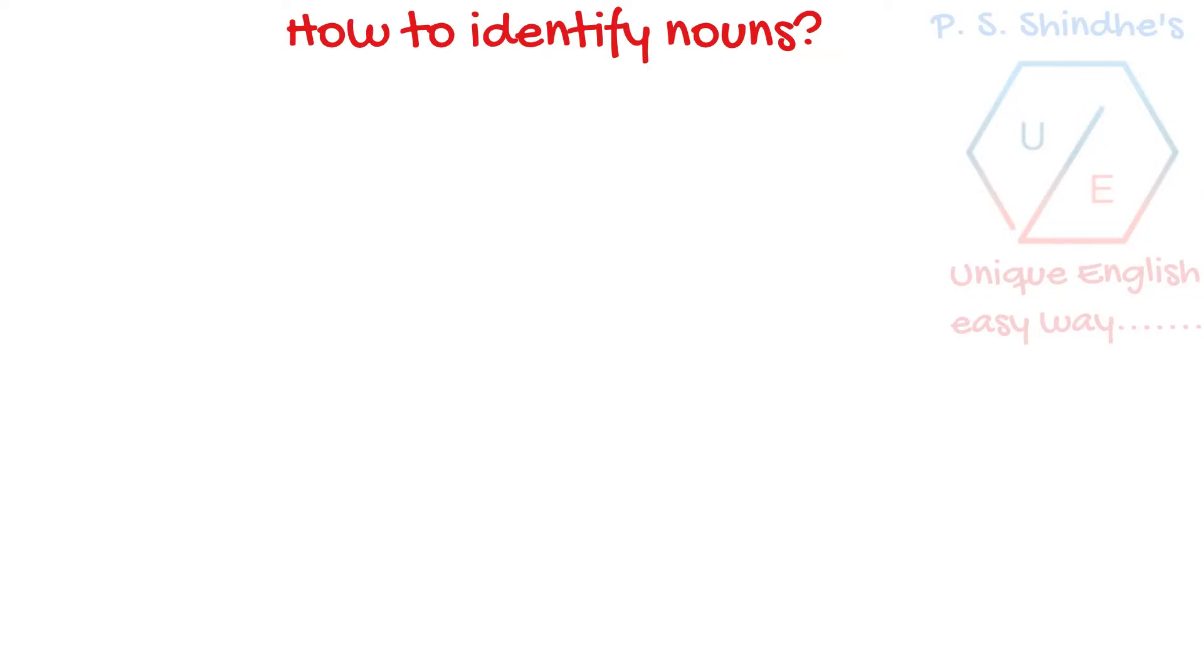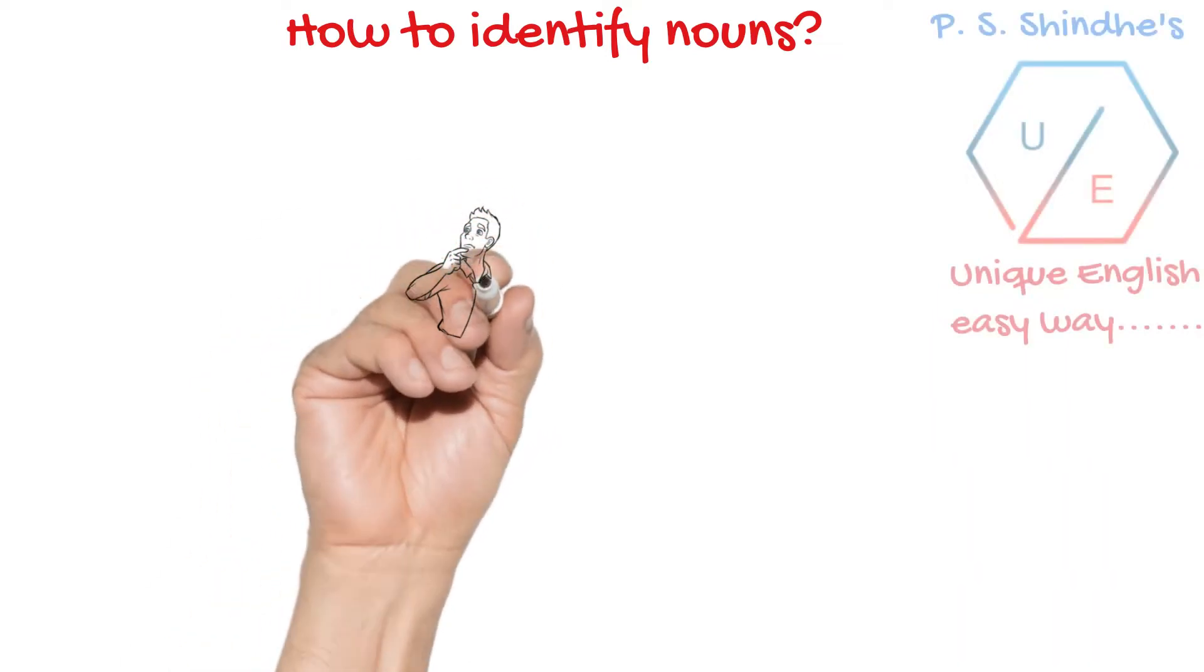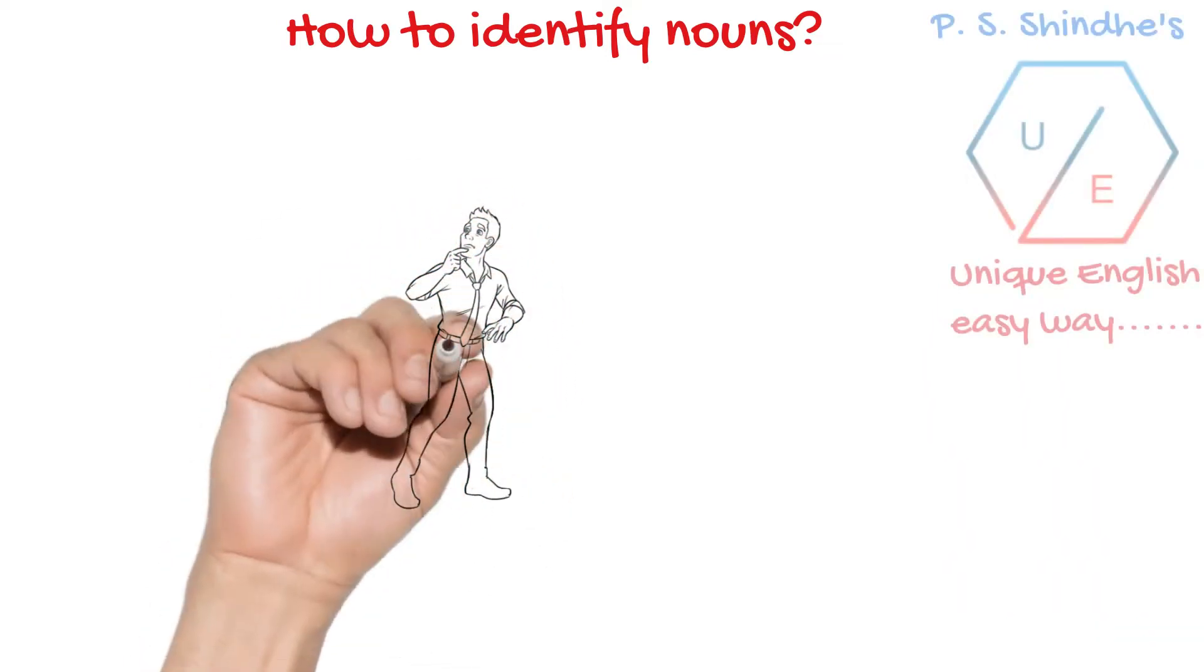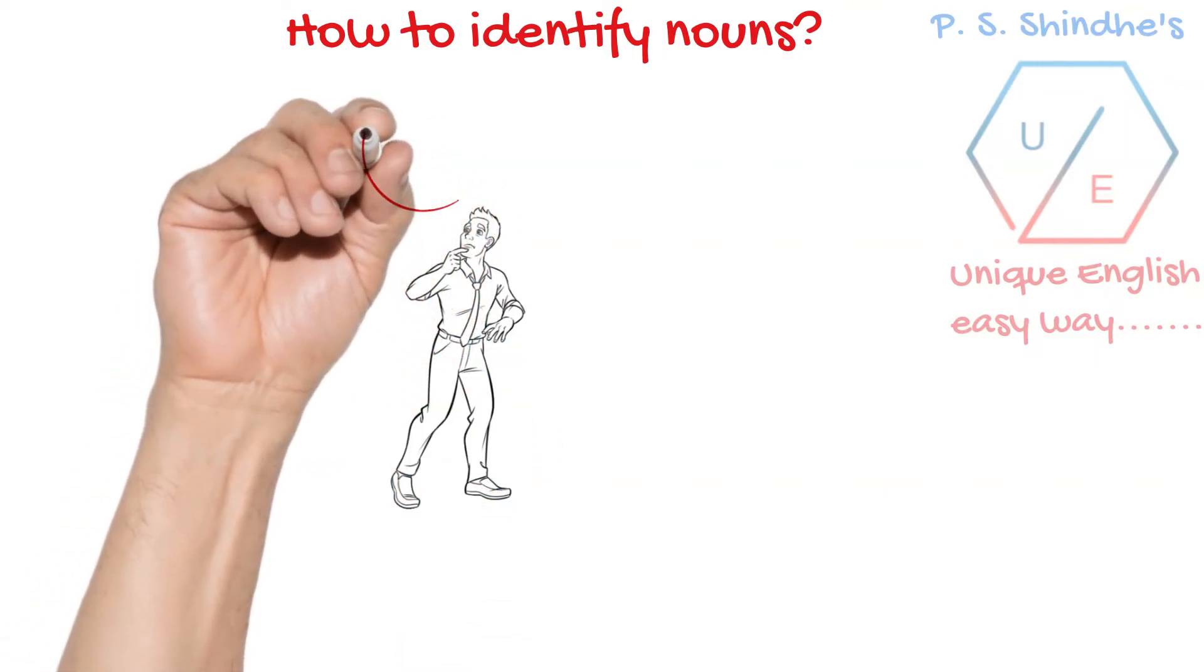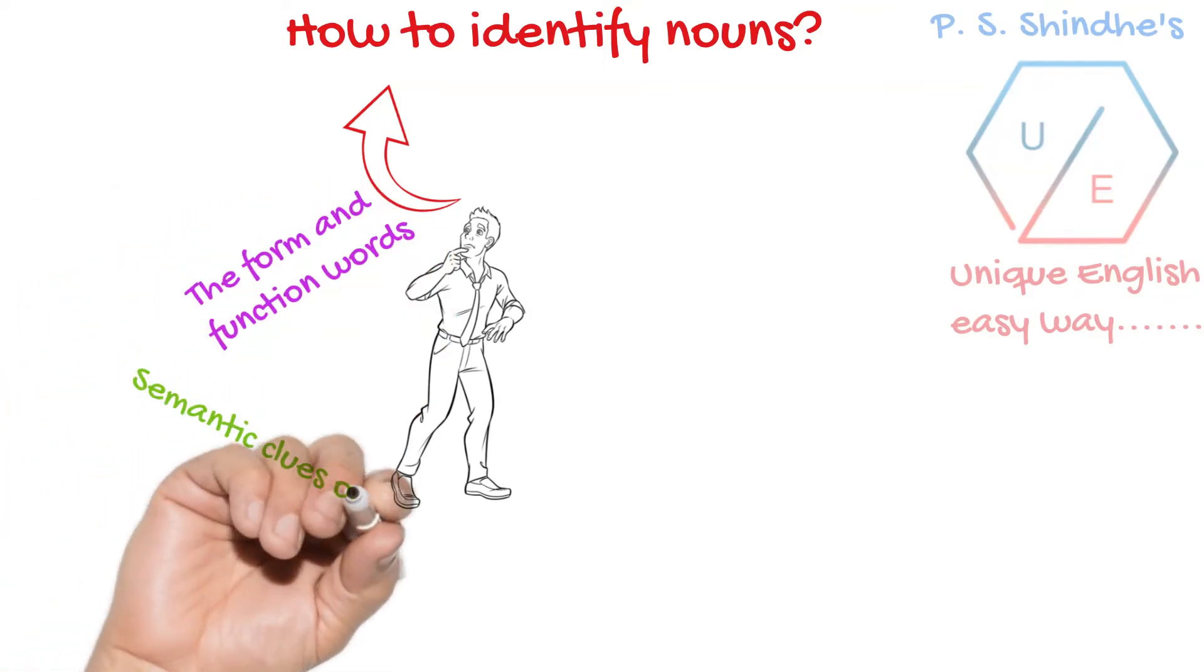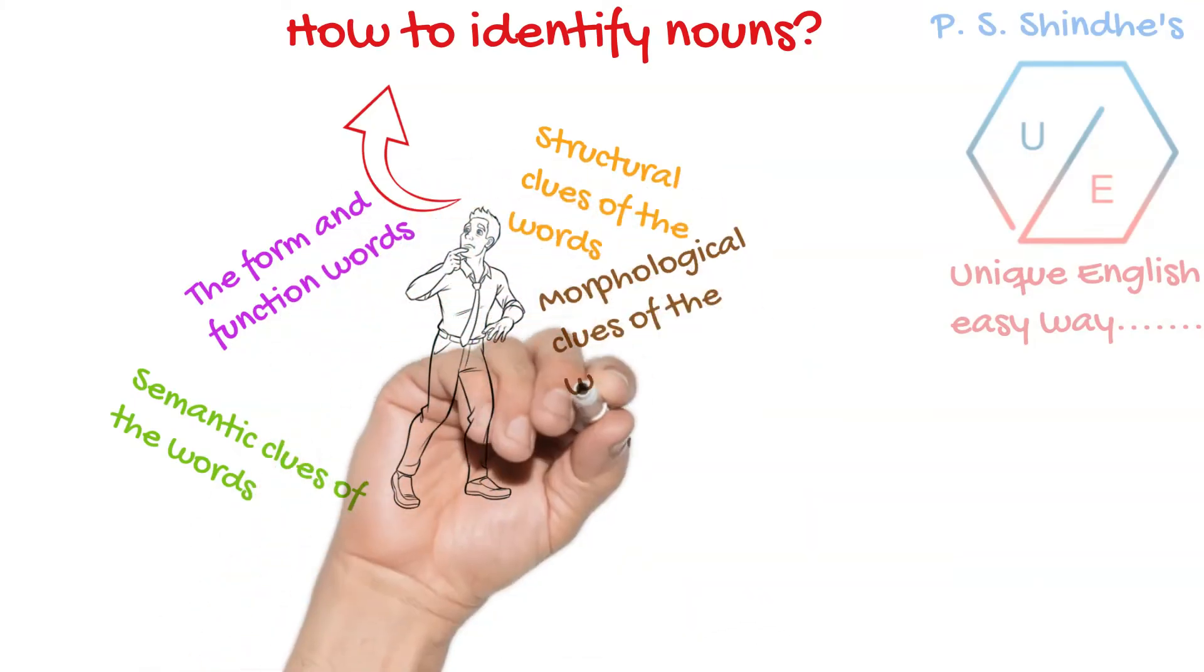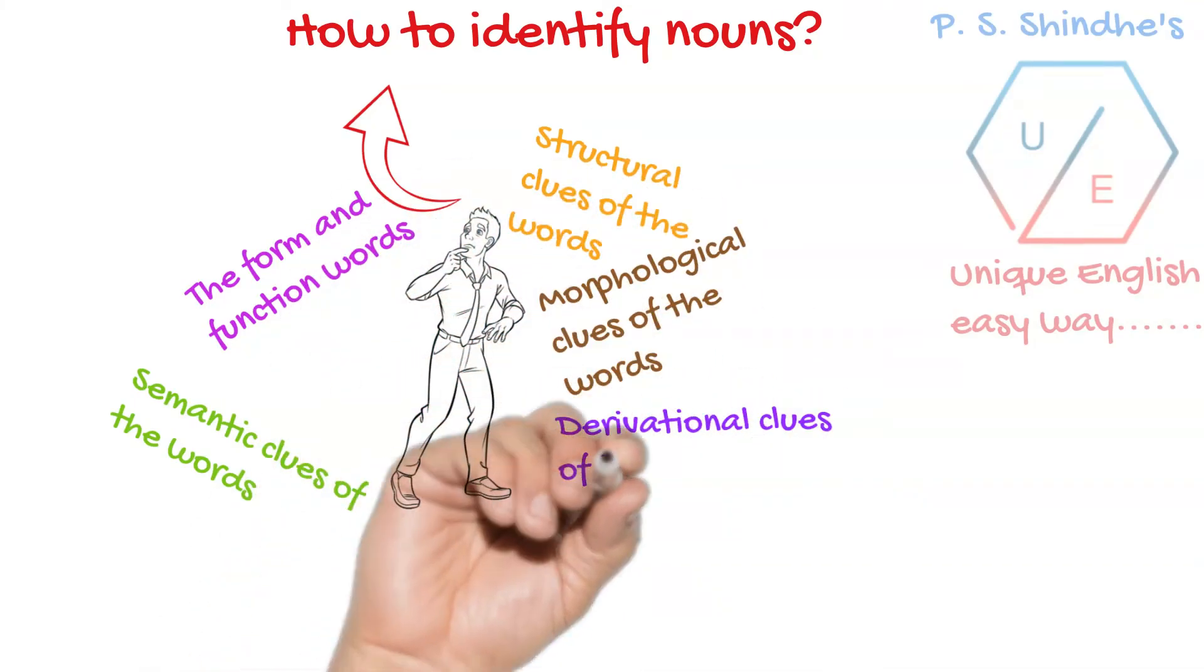So friends, let us summarize what we have seen today. Certainly, one of these tricks would aid us in identifying the nouns concealed within sentences. Finally, they are here on the screen once again: the form and function words, semantic clues of the words, structural clues of the words, morphological clues of the words, derivational clues of the words.